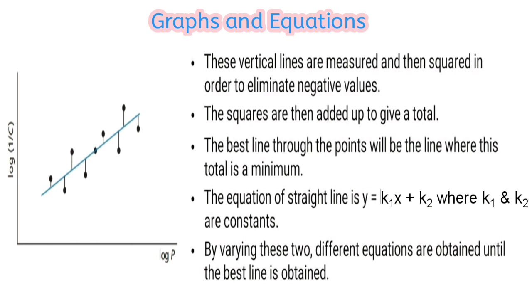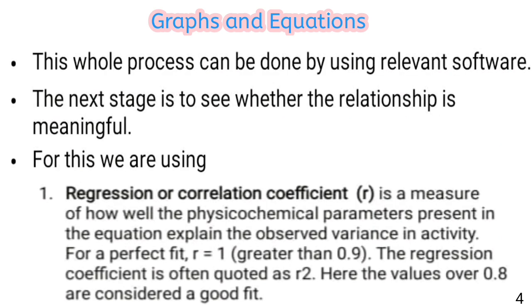The equation for a straight line is y = k₁x + k₂ (or y = mx + c), where k₁ and k₂ are constants. By varying these two constants we obtain different equations until the best line is found. This whole process can be done using relevant software.